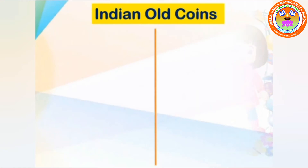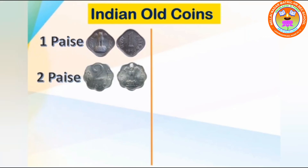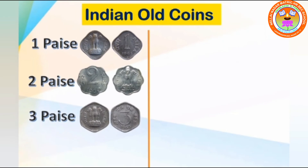Children, now we are going to see Indian old coins. This is 1 paise. What is this, children? This is 1 paise. This is 2 paise. What is this, children? This is 2 paise. This is 3 paise. What is this, children? This is 3 paise.